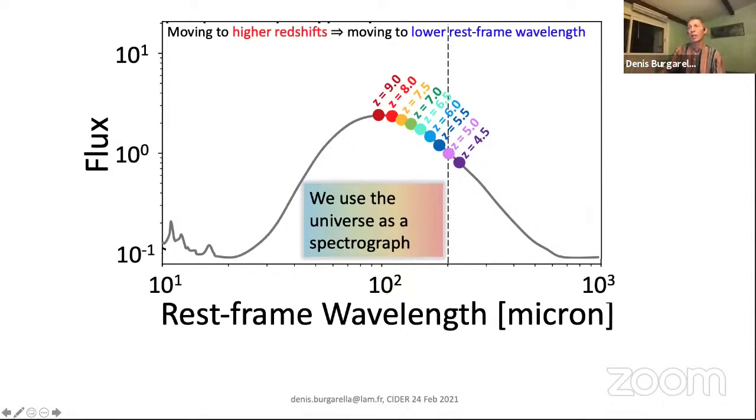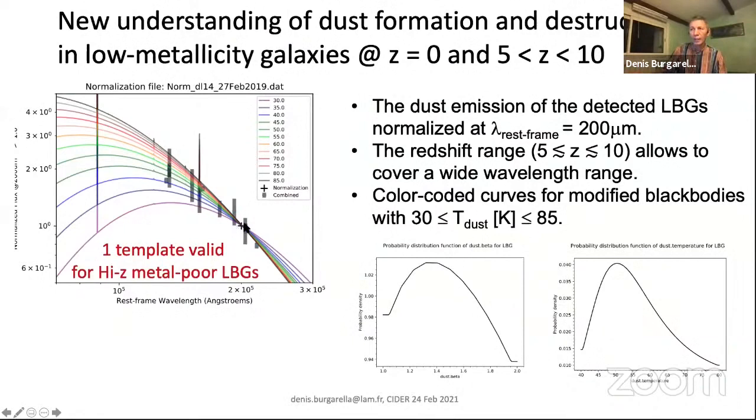Of course that means you assume these objects have the same properties, are selected in the same way, and the SED is consistent. We normalized all these SEDs at 200 microns because we assume the dust is transparent at 200 microns. Also, we don't have any point at larger wavelength, so it's not meaningful. Because of the redshift range, we can cover quite a good range of wavelengths.